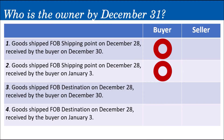Number three: goods shipped FOB Destination on December 28, received by the buyer on December 30. Under FOB Destination, the buyer can only call the merchandise theirs when it arrives at their doorstep — when it has been received and delivered to them. Here there's no problem; it was delivered on December 30. By December 31, it already belongs to the buyer.